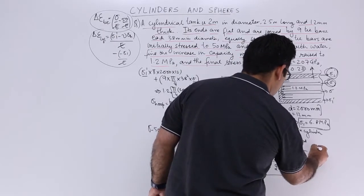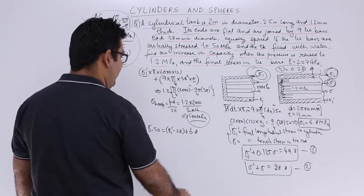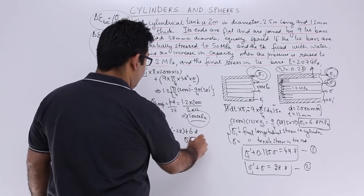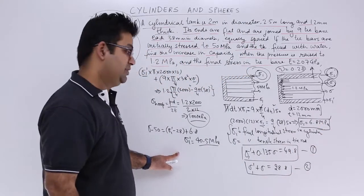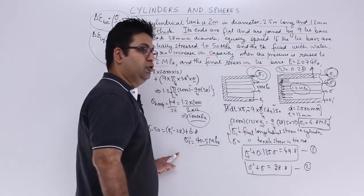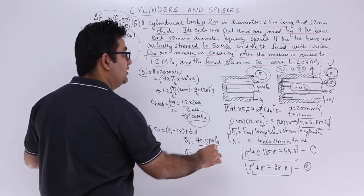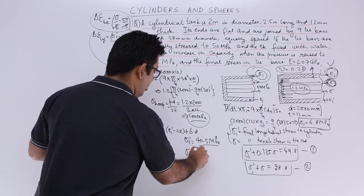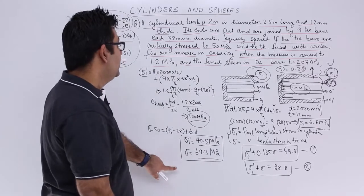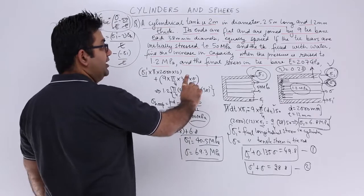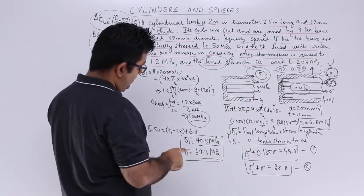We now solve the two simultaneous equations. This gives sigma_1_dash = 40.5 MPa — so from an initial compressive stress of about 6.8 MPa, after increasing internal pressure to 1.2 MPa, the longitudinal stress has risen to about 40.5 MPa tensile. The new stress in the tie rod, sigma, is approximately 69.3 MPa. These are the final stresses.